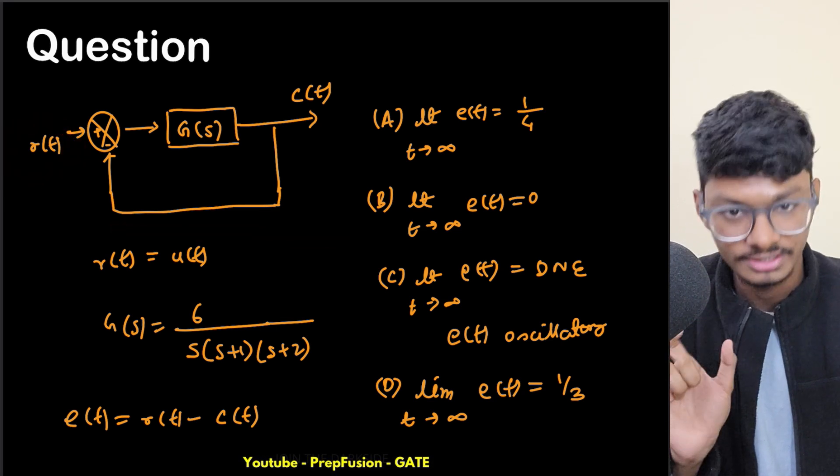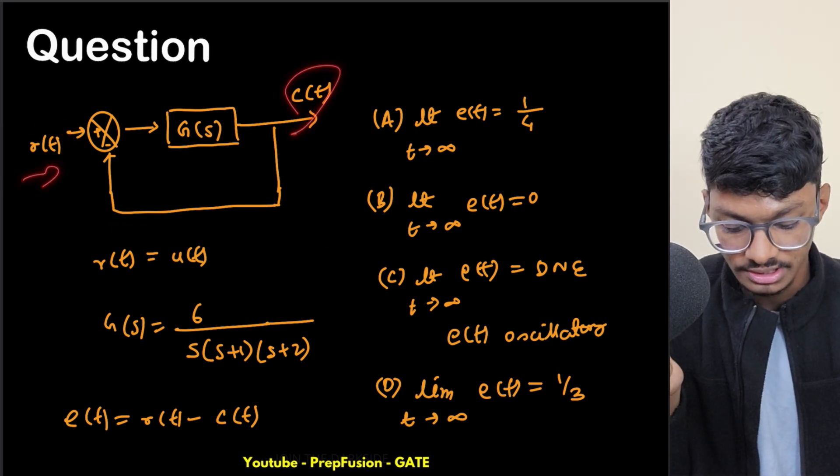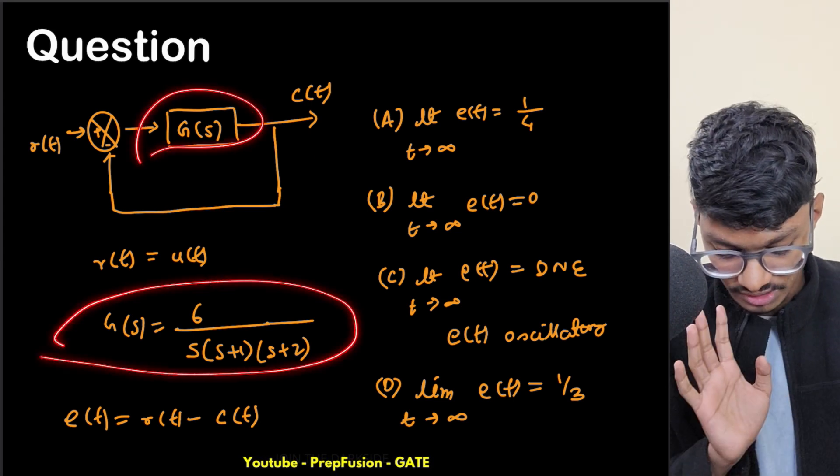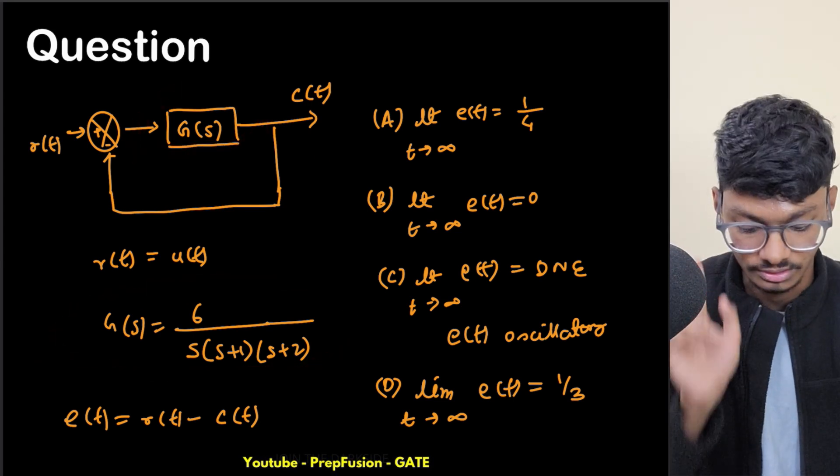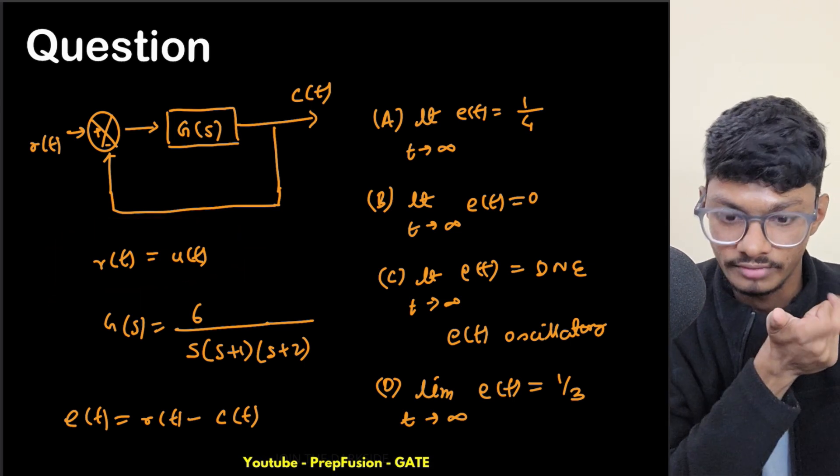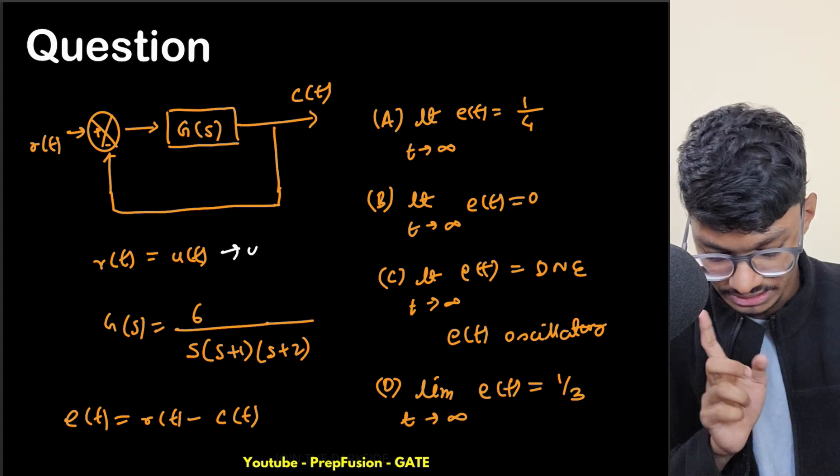Let's see the question. You have been given a block diagram where r(t) is the input and c(t) is the response. This is a unity negative feedback system and G(s) is given as 6 upon s(s+1)(s+2). It has been given that r(t) equals u(t), which is a unit step.